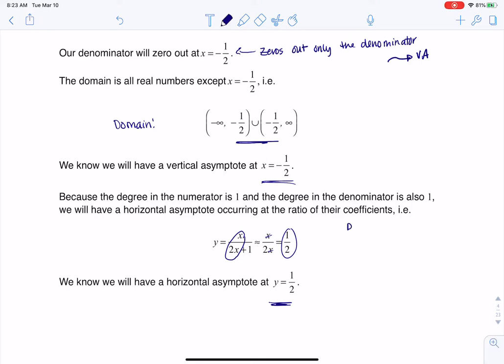And that was one of our cases for end behavior. When the degree in the numerator is the same as the degree in the denominator, you look at the ratio of the lead coefficients. And whatever that ratio is, and for this particular problem it was 1 half, you will always have a horizontal asymptote at that ratio.